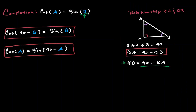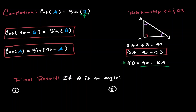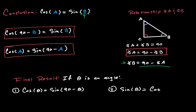Let's generalize this result. If we have any angle — let's call it theta — then we have two identities: the cosine of that angle equals the sine of 90 minus that angle, and the sine of that angle equals the cosine of 90 minus that angle. We call these the co-function identities.